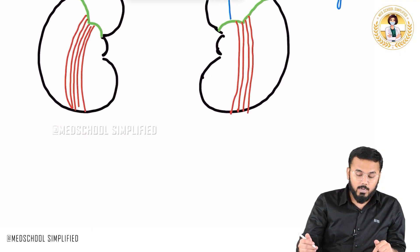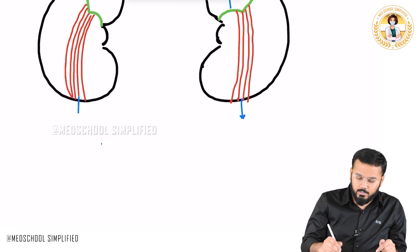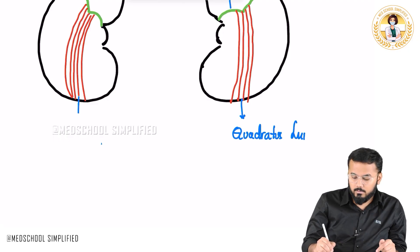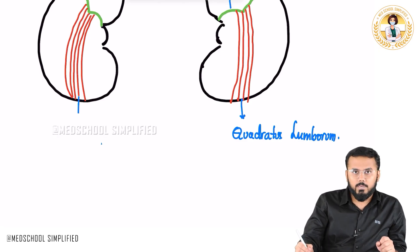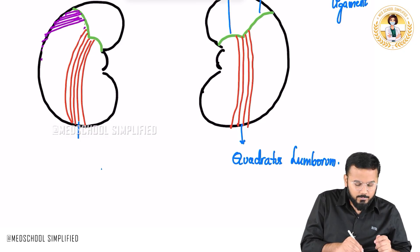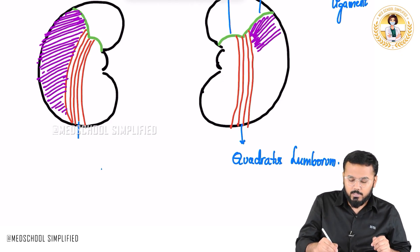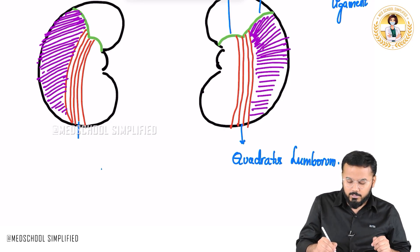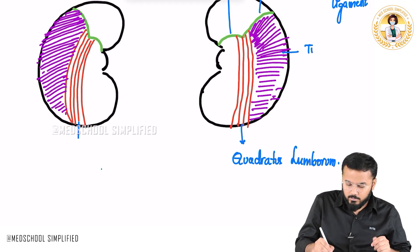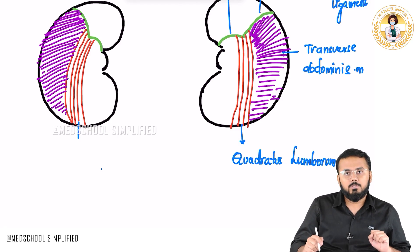This muscle which you can see here is called the quadratus lumborum muscle. After the quadratus lumborum, we have got another muscle that is somewhat transverse in nature, which is why it is called the transverse abdominus muscle.